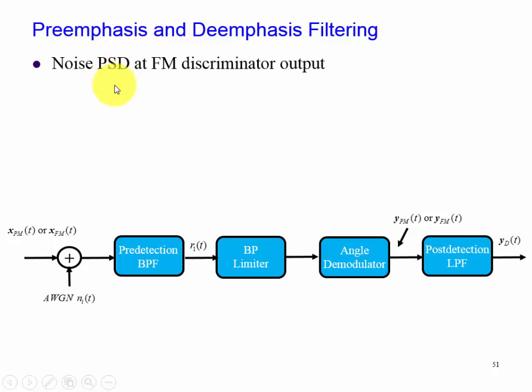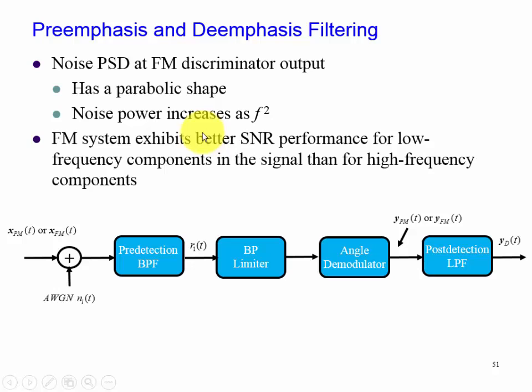So our power spectral density of the noise has a parabolic shape, so our noise power increases as F squared. We can have better signal-to-noise ratio performance for low frequency components as well as high frequency components by introducing